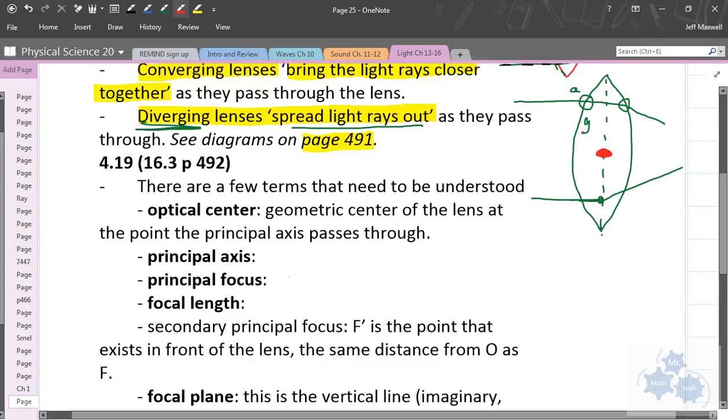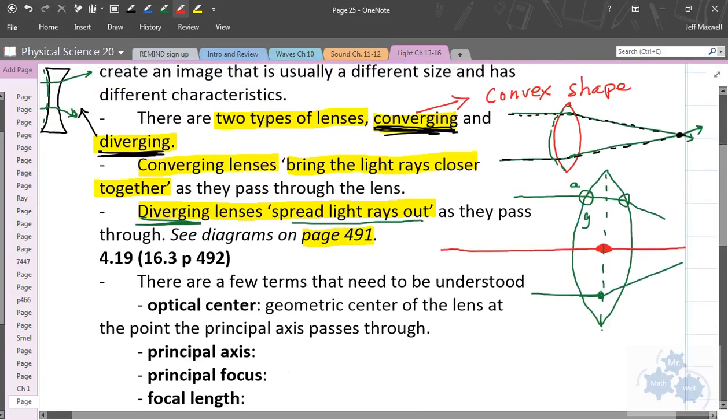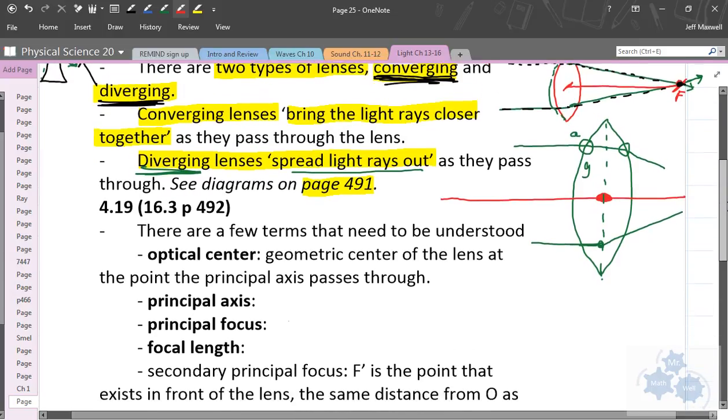It's the point also that the principal axis, and there's a principal axis for lenses just like there is for mirrors, it's the point that the principal axis would pass through the lens. The principal focus would be for a converging lens would be right here. Principal focus where all the light rays meet. The focal length is the distance from the optical center to the focus. Focal length. Again, very similar to the mirror chapter.